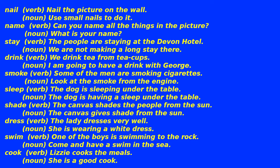Name — noun: 'What is your name?' Stay — verb: 'The people are staying at the Devon Hotel'; noun: 'We are not making a long stay there.' Drink — verb: 'We drink tea from tea cups'; noun: 'I am going to have a drink with George.' Smoke — verb: 'Some of the men are smoking cigarettes'; noun: 'Look at the smoke from the engine.' Sleep — verb: 'The dog is sleeping under the table'; noun: 'The dog is having a sleep under the table.' Shade — verb: 'The canvas shades the people from the sun'; noun: 'The canvas gives shade from the sun.'